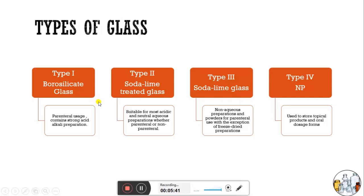We are mainly going to discuss Type 1 to Type 3 glass, as Type 4 is non-parenteral glass used for topical or oral dosage forms. Type 1 glass is mainly used for parenteral products containing strong acid and alkaline preparations. Type 2 is suitable for acidic and neutral aqueous preparations whether parenteral or non-parenteral. Type 3 is for non-aqueous preparations and powder for parenteral use, with the exception of freeze-dried preparations.